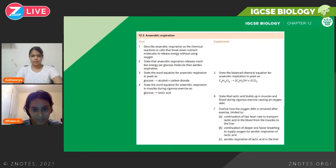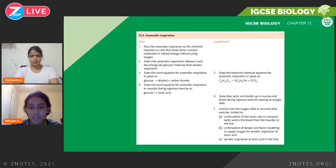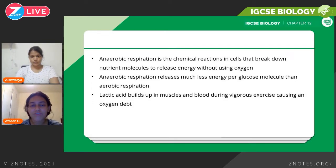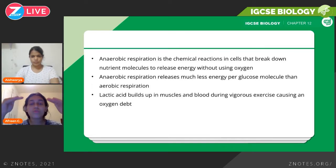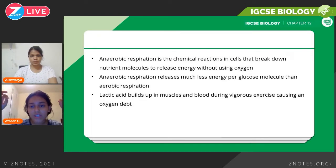Now you have anaerobic respiration — this one's a little lengthier. You have the definition, some statements to learn, the word and chemical equations, and you need to know how oxygen debt is removed. Aerobic respiration is in the presence of oxygen; anaerobic respiration is in the absence of oxygen. You need to mention the definition of respiration and then 'in the absence of oxygen' — that's the key word. Anaerobic respiration is the chemical reactions in cells that break down nutrient molecules to release energy without using oxygen, or in the absence of oxygen.